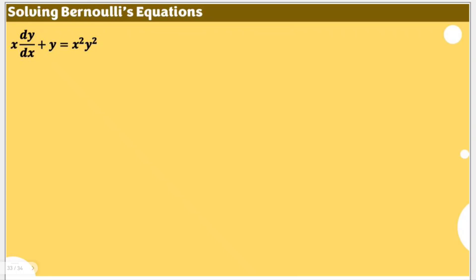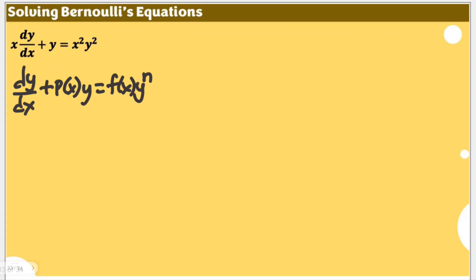Let us solve this given equation, but first let's identify if this is a Bernoulli equation. A Bernoulli equation is almost similar to a linear equation; it's just that on the right-hand side of the equation, when written in standard form, there is an expression of y raised to a certain power of n. This is the standard form for the Bernoulli equation: dy/dx plus p(x)y is equal to f(x) times y to the power of n. We cannot remove that y to the power of n, so we are going to use the concepts necessary in solving the Bernoulli equation.